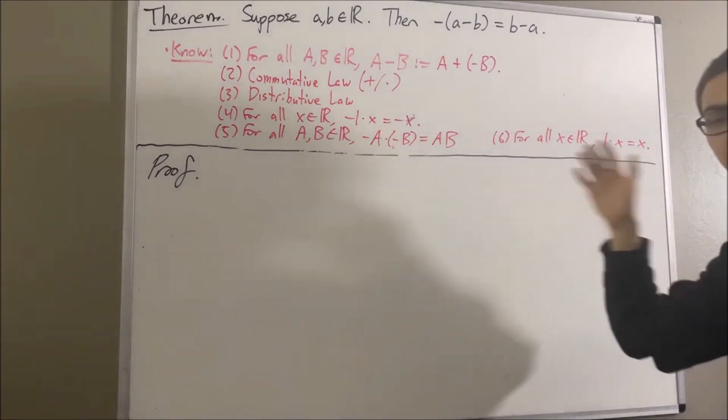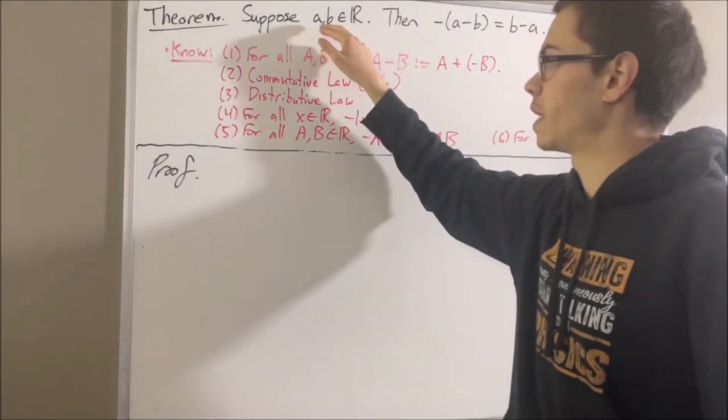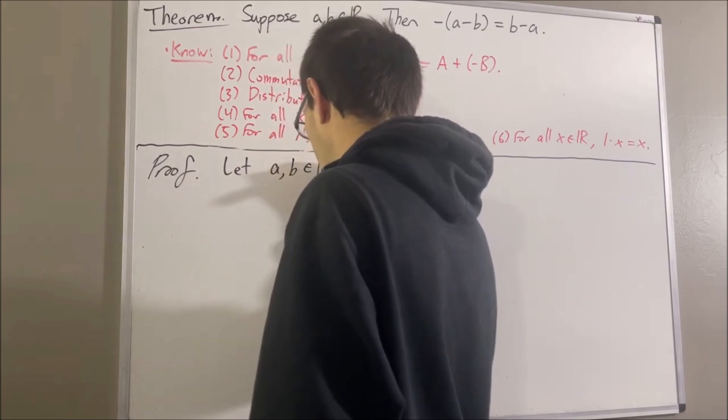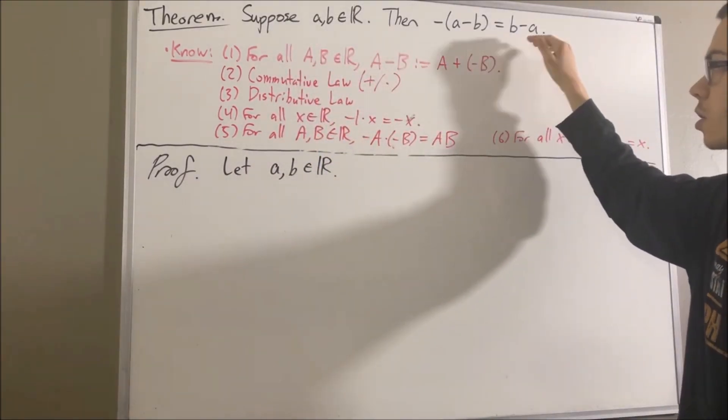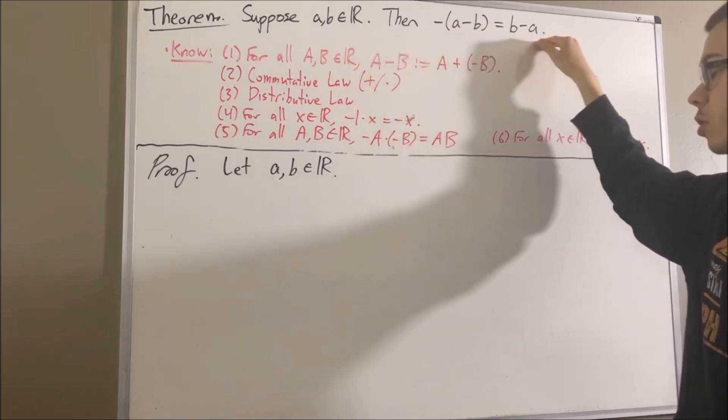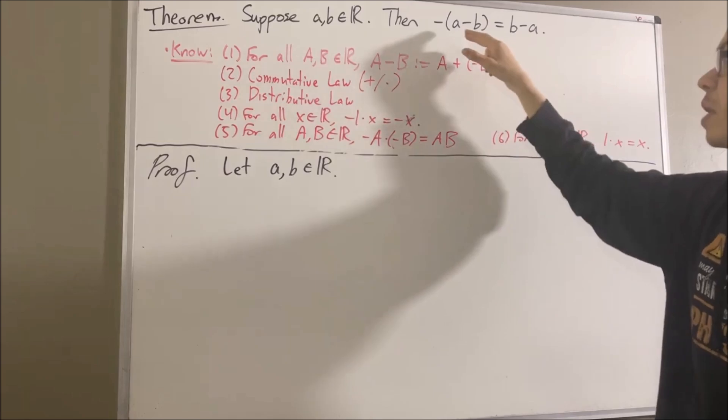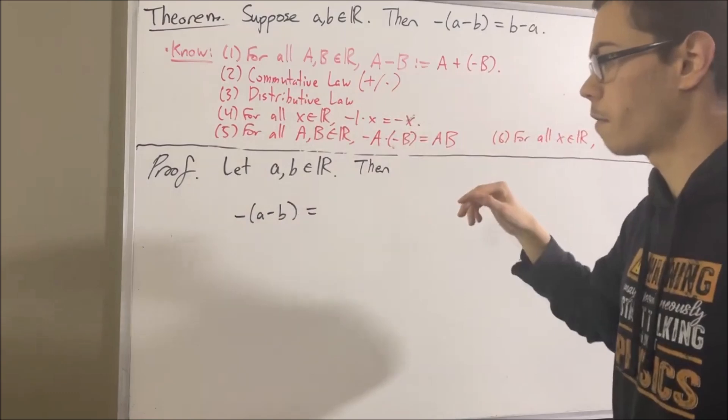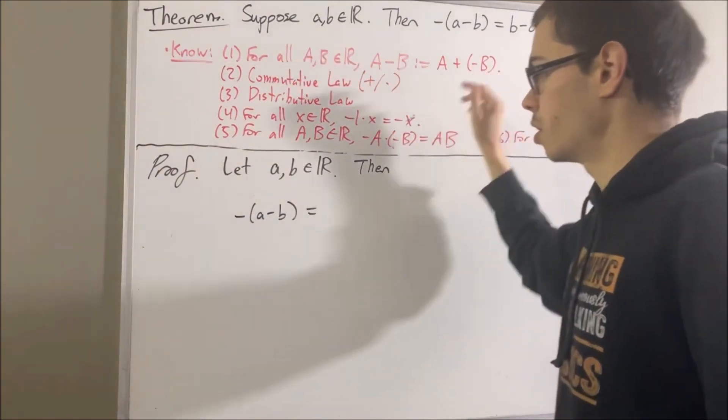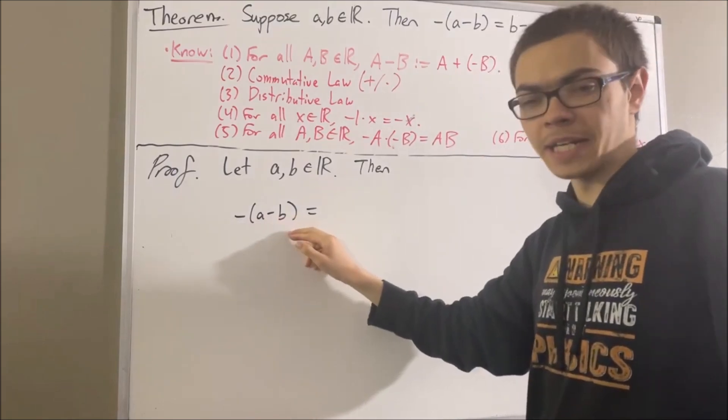Okay, so now let's get into the proof. Now, to start out the proof, let's give ourselves two arbitrary real numbers A and B. And from here, we want to prove that this equality is true. So, we're going to establish that this equality is true through a chain of equalities. So, let me start out by writing the negative of A minus B. Now, from the definition of subtraction, we know that A minus B is equal to A plus the negative of B.